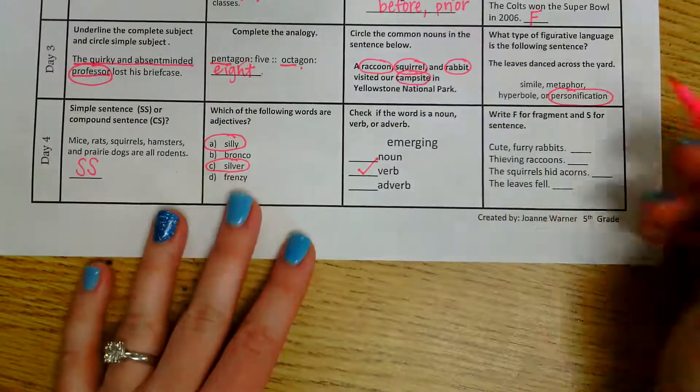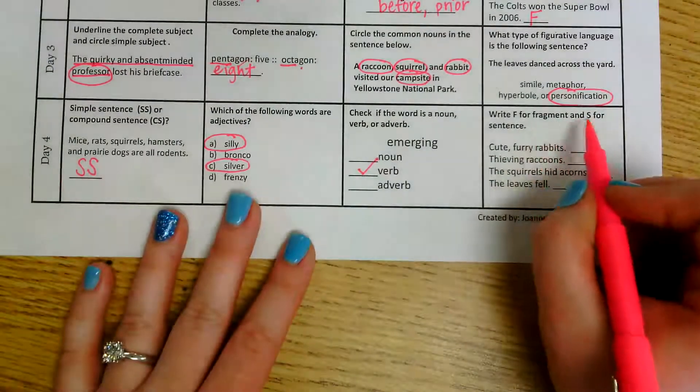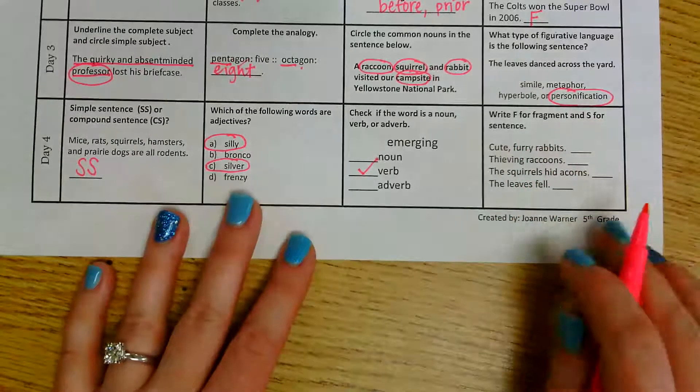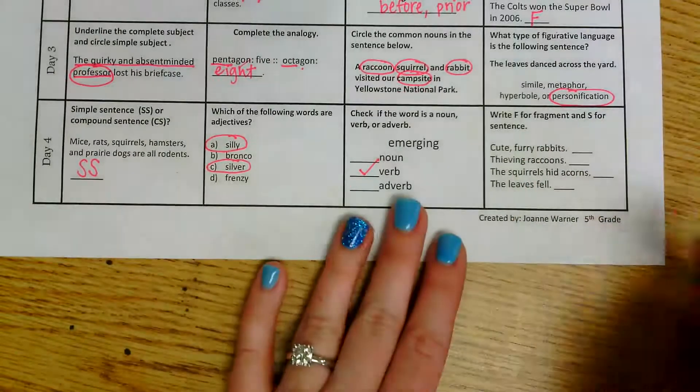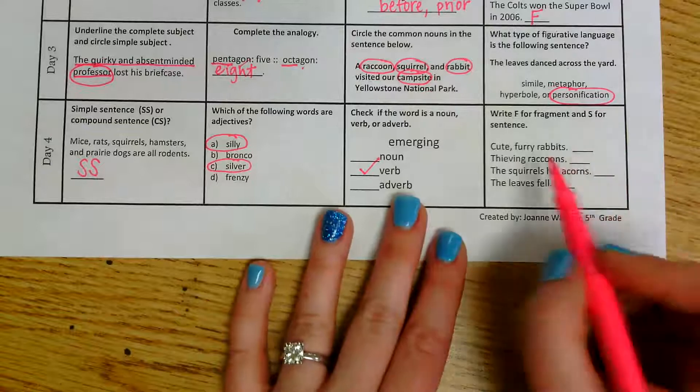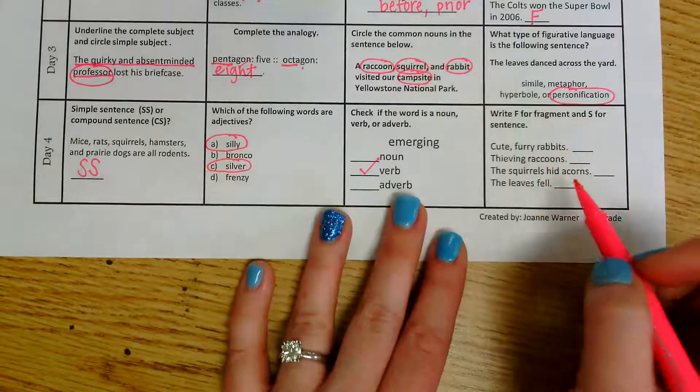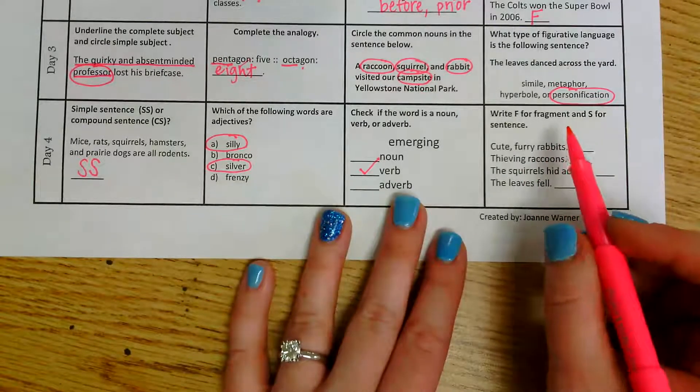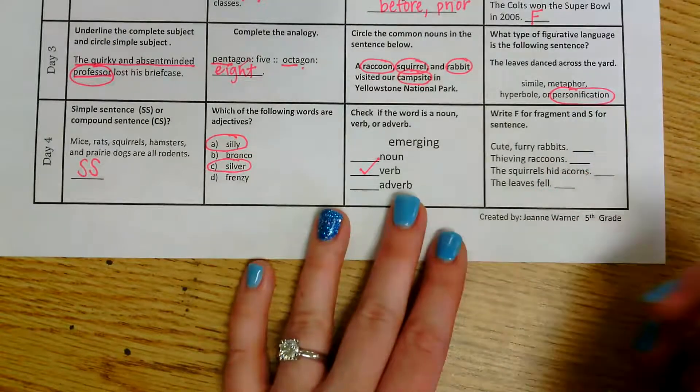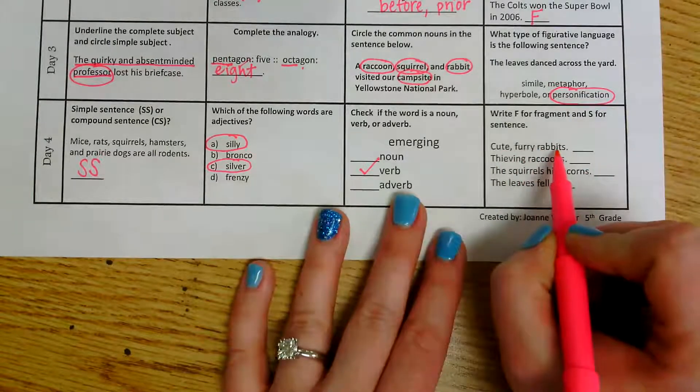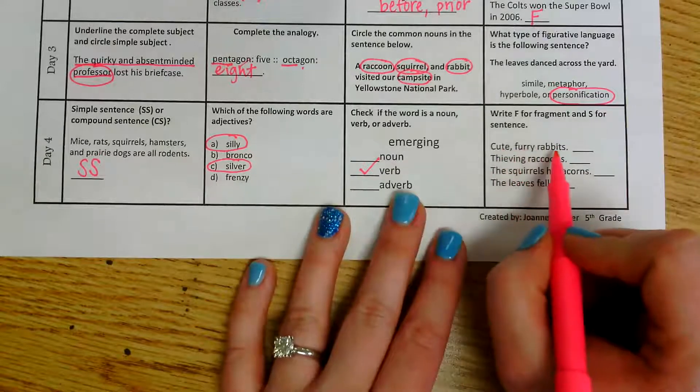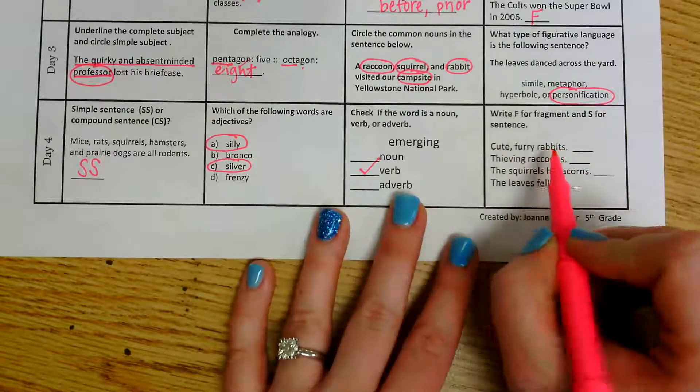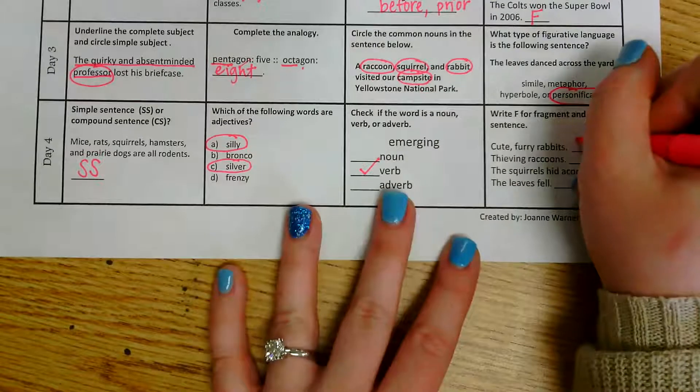And the last one, write F for fragment and S for sentence. So on this one, we have been given phrases. We need to figure out if we have a complete sentence here or if we have a fragment, which would just be a subject or just be a predicate. So cute furry rabbits. Well, that would be just a subject. It doesn't tell me what the cute furry rabbits are doing. So this one's going to be fragment.